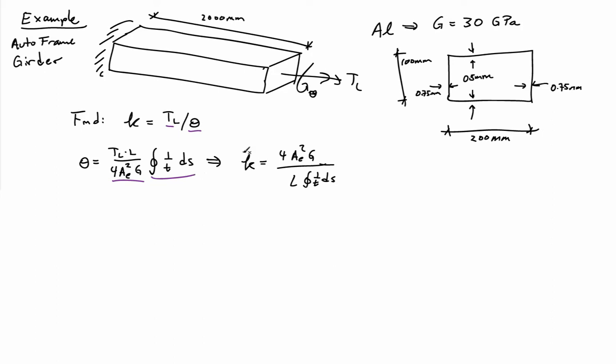So the expression for the stiffness can be found just by rearranging the terms here. And I find that the torsional stiffness is 4AE squared G, divided by the length of the tube, divided by the closed-loop integral of 1 over TDS. So really the only thing that's difficult here, I already know what most of these terms are, is just simply that integral.